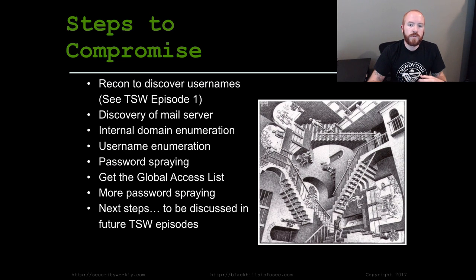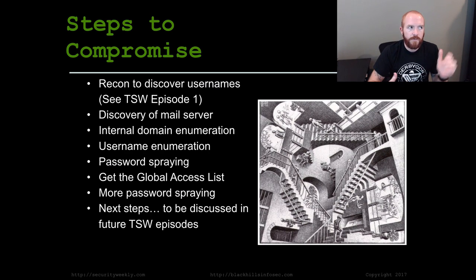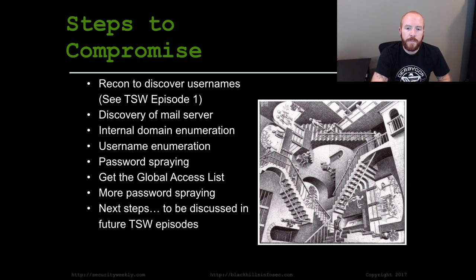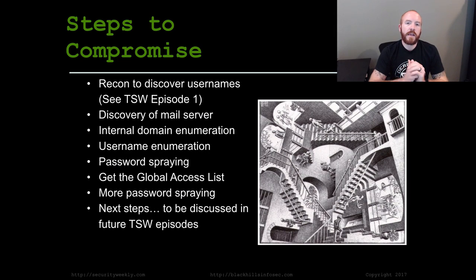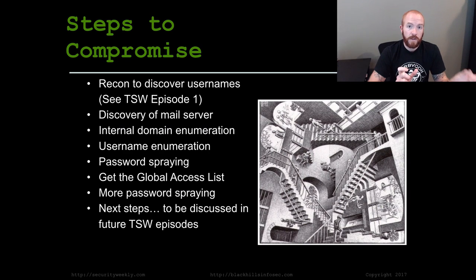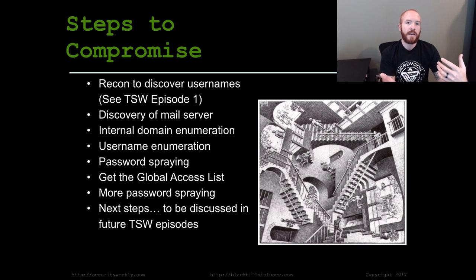Once we gather our potential usernames, the next thing we have to do is find where the mail server is — which for most organizations isn't that hard. You can typically find it at mail.domain.com, or utilize Exchange's auto-discover functionality. The cool thing about Exchange from an attacker's point of view is that if the organization hasn't set up UPNs to allow login via email address and they're keeping it to the Active Directory login — meaning domain slash username — we still have to figure out that internal domain. If they're not using the fully qualified external domain name internally, it takes some time to figure out what that internal domain is.